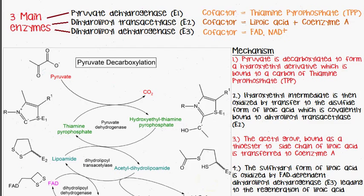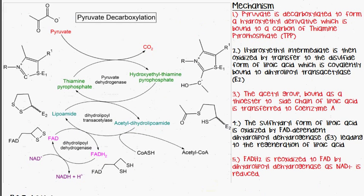In terms of the mechanism itself, the first thing which happens is the pyruvate is decarboxylated and carbon dioxide is released. It then forms a hydroxyethyl derivative when it binds to the reactive carbon of thiamine pyrophosphate, its cofactor. Via the enzyme pyruvate dehydrogenase, it forms hydroxyethyl thiamine pyrophosphate.